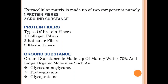There are three types of protein fibers: collagen fibers that are made up of collagen, reticular fibers, and elastic fibers. Ground substance is made up of mainly water — about 70% — and large organic molecules such as glycosaminoglycans (GAGs), proteoglycans, and glycoproteins.